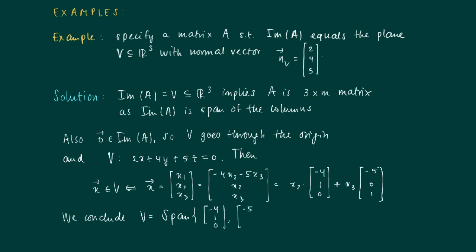And if we now take these vectors as columns of our matrix A, then of course the image of A is just the span of minus 4, 1, 0 and minus 5, 0, 1, which equals V. So we find that the image of the matrix A equals V.